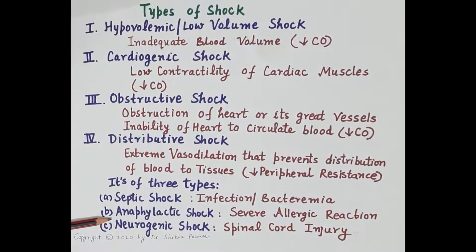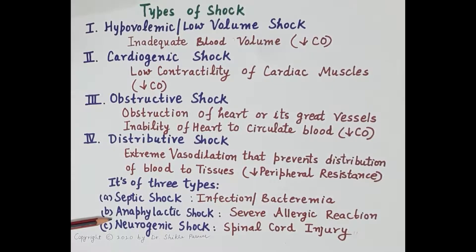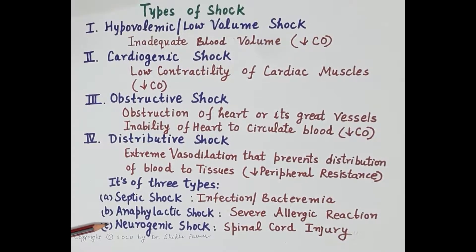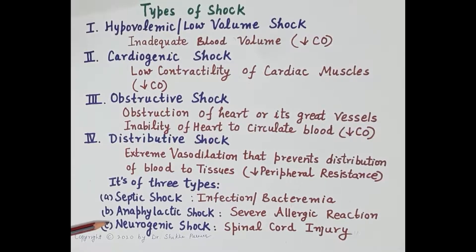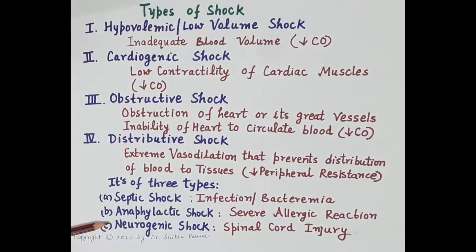The second type of distributive shock is anaphylactic shock. It is a severe allergic reaction to allergens like drugs, food, insect venom, etc. There is excessive release of histamine, and this histamine causes vasodilation, which further reduces perfusion to the tissues.